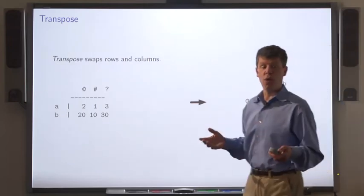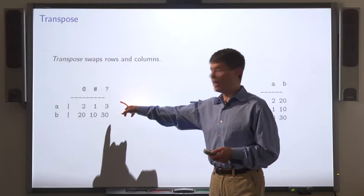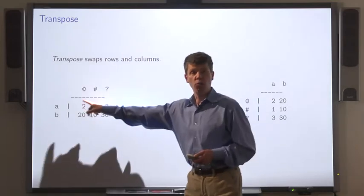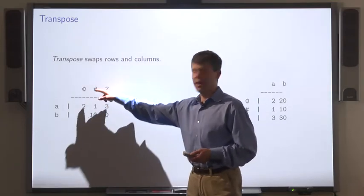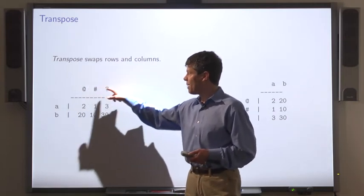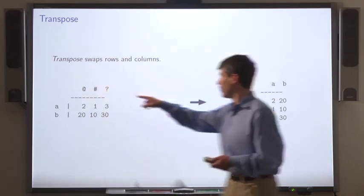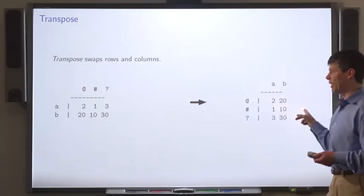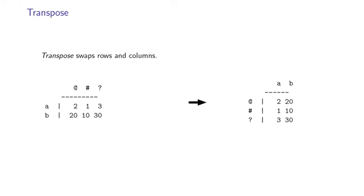Transpose swaps rows and columns. So if you start with this matrix, where the row labels are A and B and the column labels are at, sharp, and question mark, you apply transpose, you get this matrix. So for example, the entry in row A and column sharp of the original matrix is the entry in column A and row sharp of the transposed matrix.